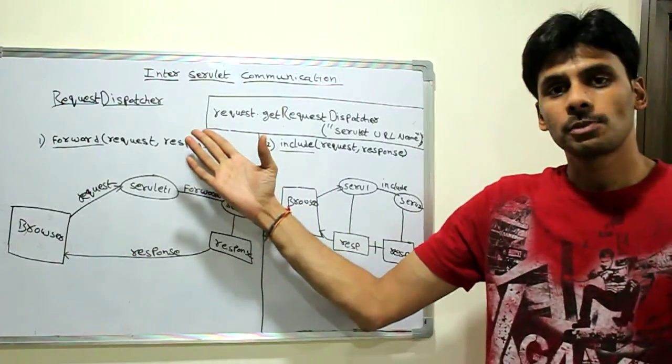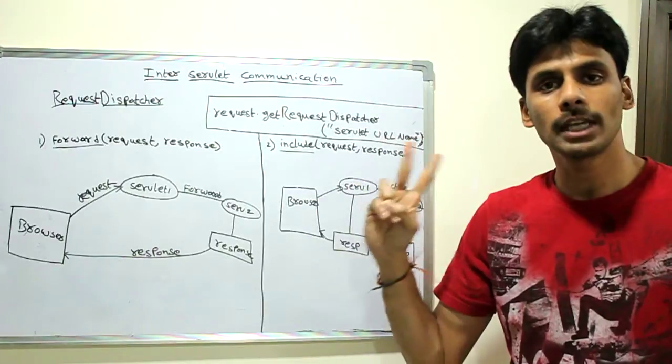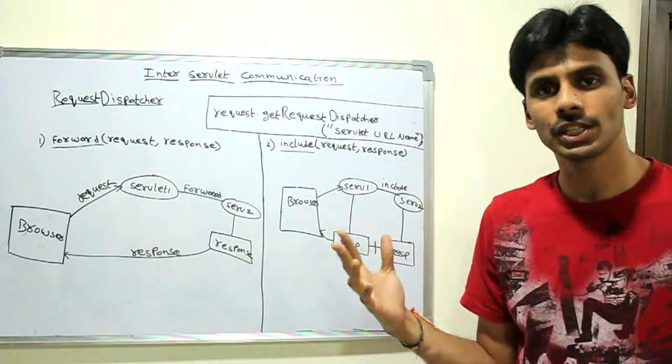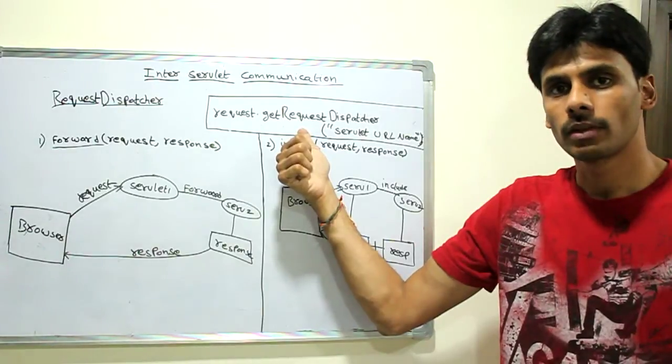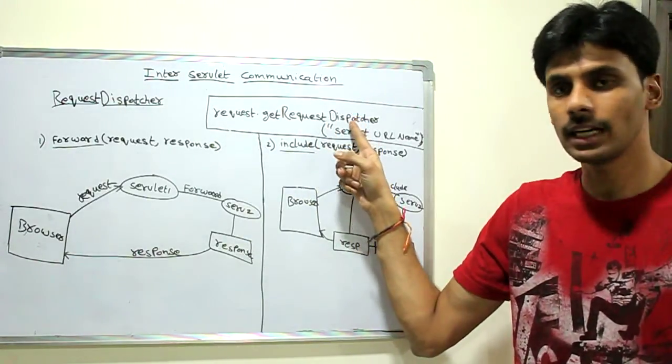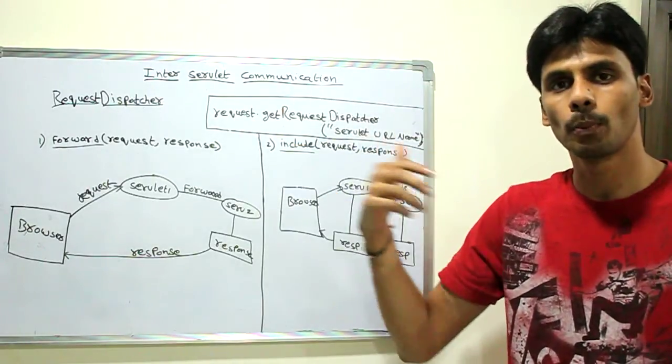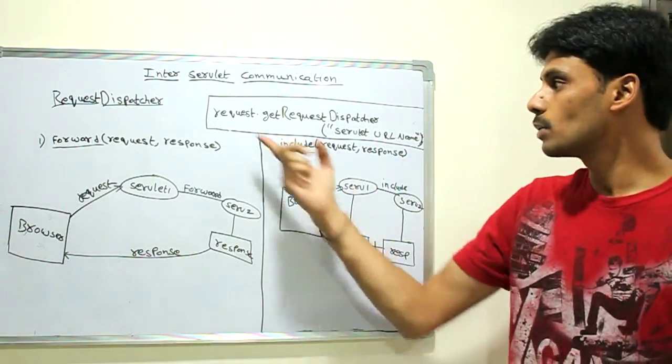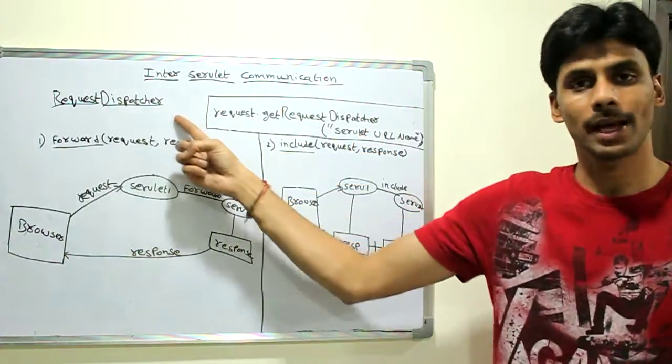So let's get back to request dispatcher. The request dispatcher provides us with forward and include. There are two steps to do request dispatching or delegation. The first step is to get a request dispatcher object. We get it by calling the getRequestDispatcher method on the request object. So in your doGet or doPost or service methods, you can use the request.getRequestDispatcher call to get a request dispatcher object.